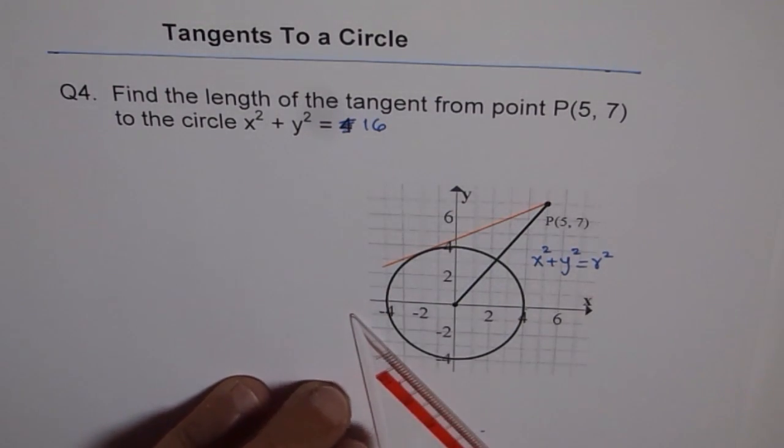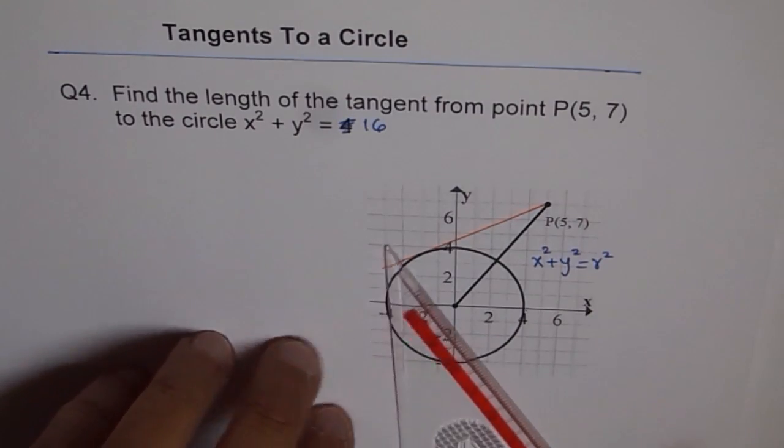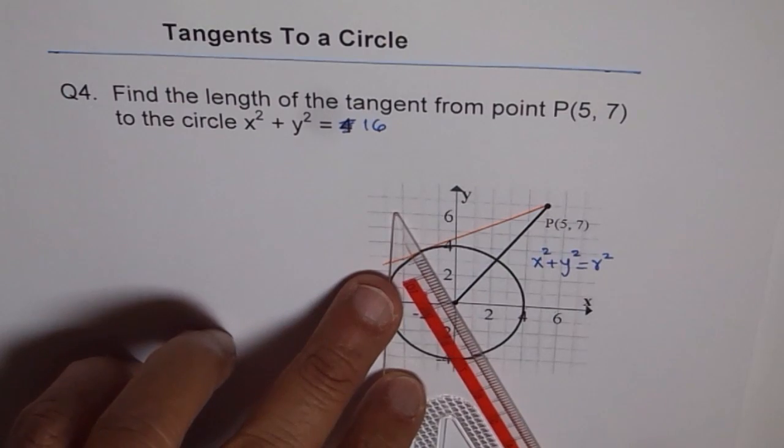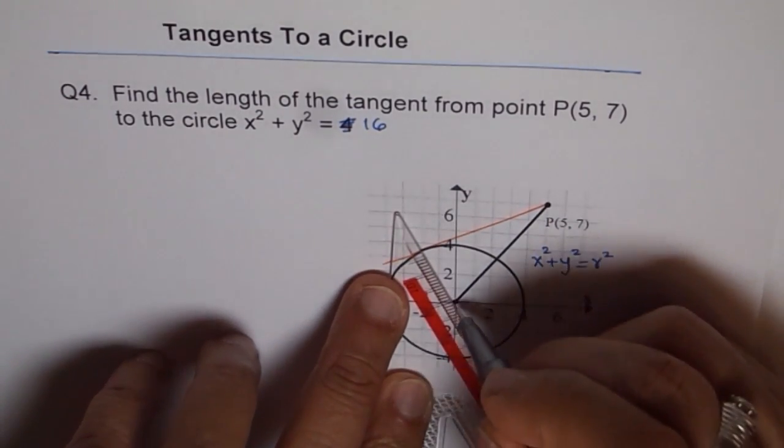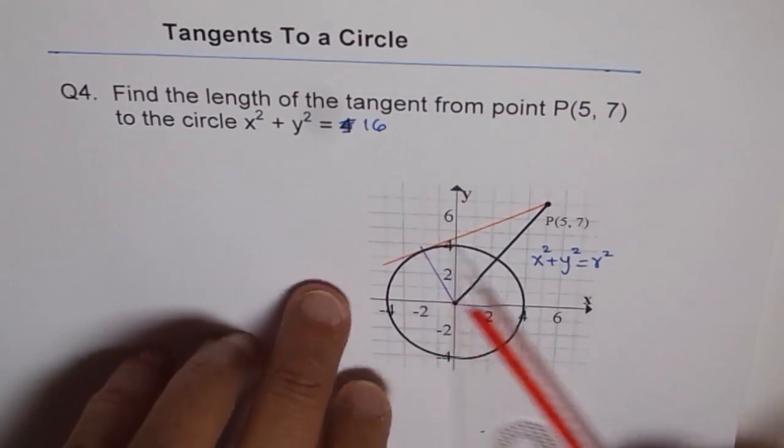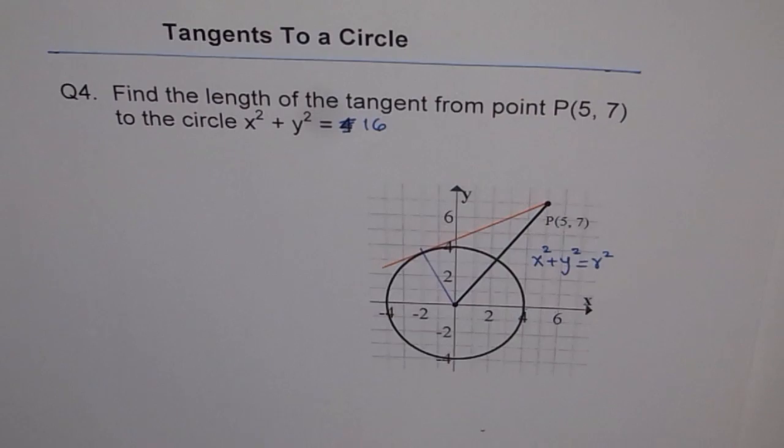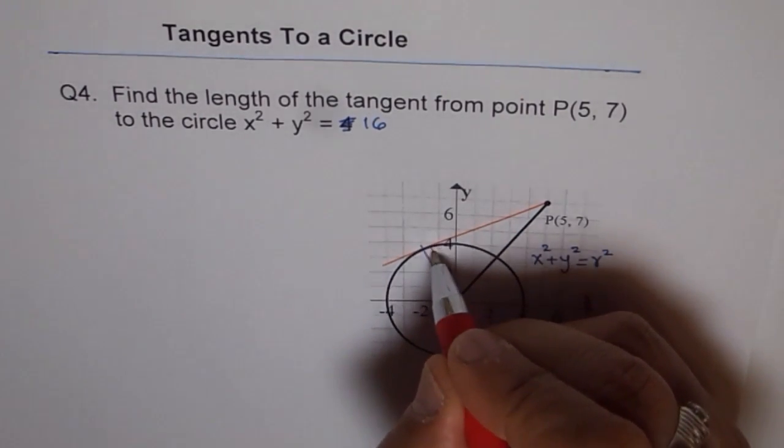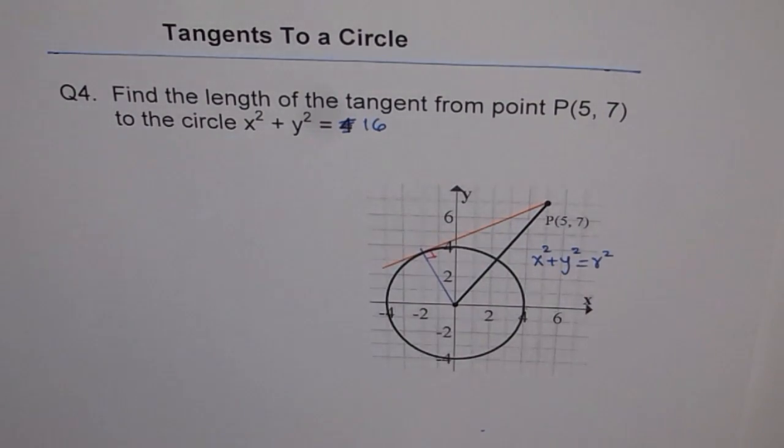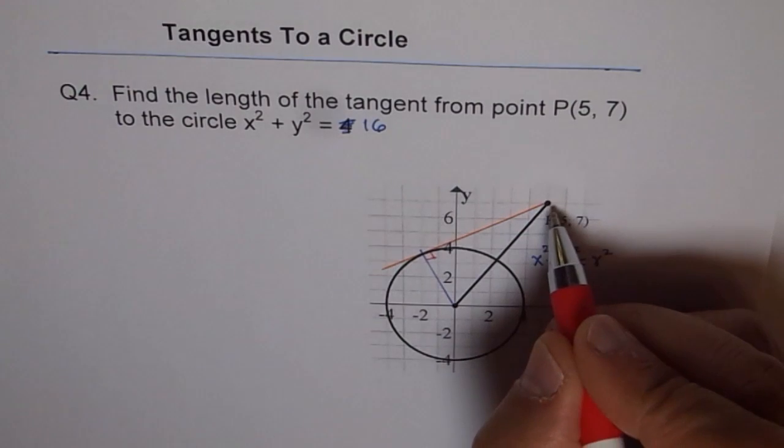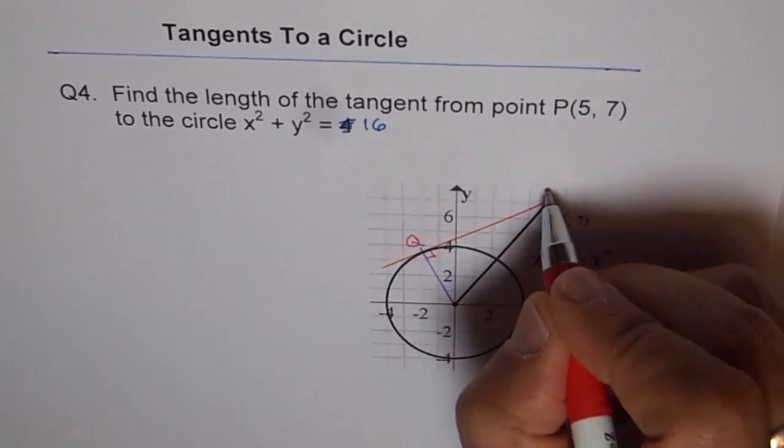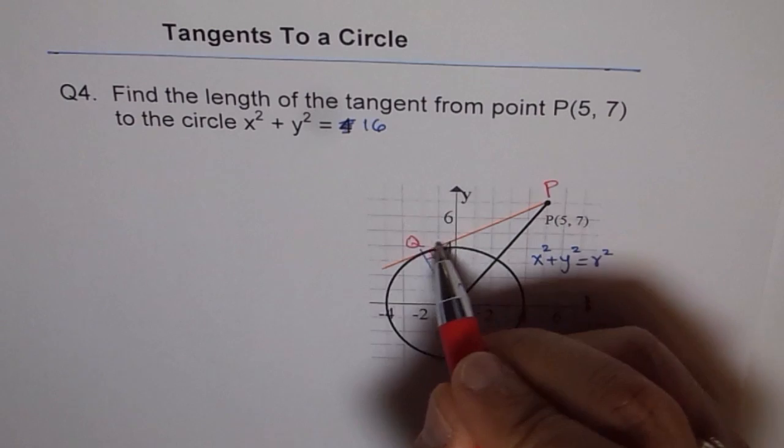We have the tangent here, and if we draw the radius at that point, then we should have right angles there. When we draw this radius here, then that radius should make a right angle with our tangent. That is the property of circle which we'll explore in finding the length of the tangent line. The length of the tangent line we're looking for is from P to Q.